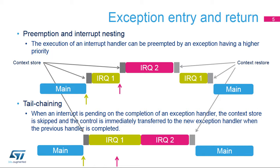When an interrupt is served and a new request with higher priority arrives, the new exception can preempt the current one — this is called nested exception handling. The previous exception handler resumes execution after the higher priority exception is handled. When an interrupt request with lower or equal priority is raised during execution of an interrupt handler, it becomes pending. Once the current interrupt handler is finished, the context saving and restoring process is skipped and control is transferred directly to the new exception handler to decrease interrupt latency.